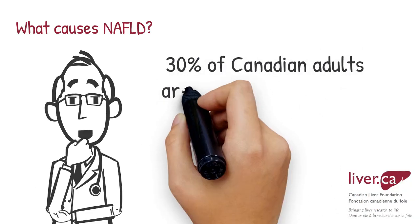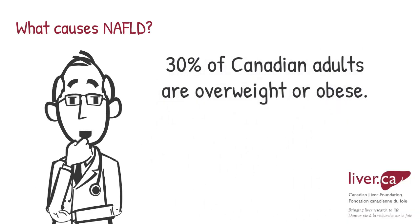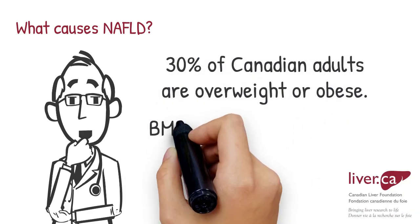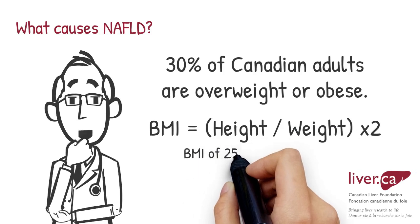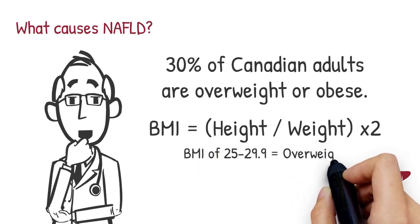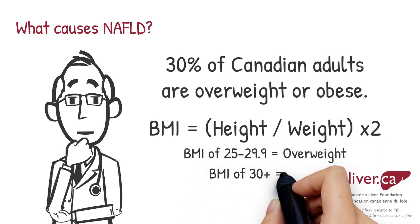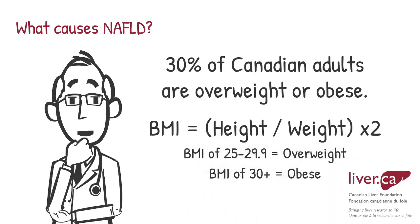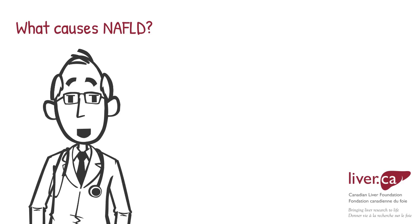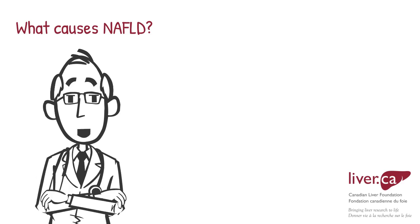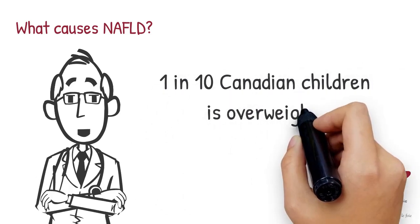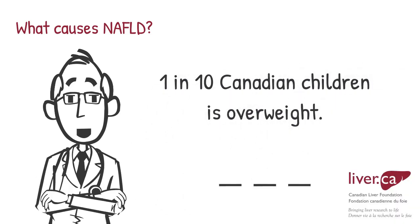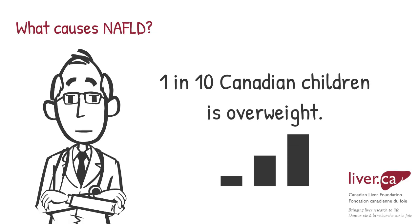Approximately 30% of Canadian adults, about 7.3 million, reported a body mass index that classified them as either overweight or obese. It is also estimated that 1 in 10 Canadian children is overweight, a number that has almost tripled in the last decade.